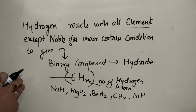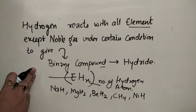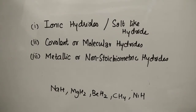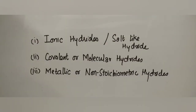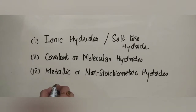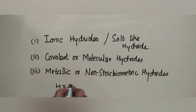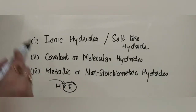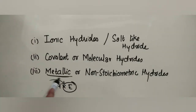We will now discuss what the different classifications of hydrides are. Depending upon the nature of the element with which hydrogen combines, hydrides are classified into three types: ionic hydrides, covalent hydrides, and metallic or non-stoichiometric hydrides.